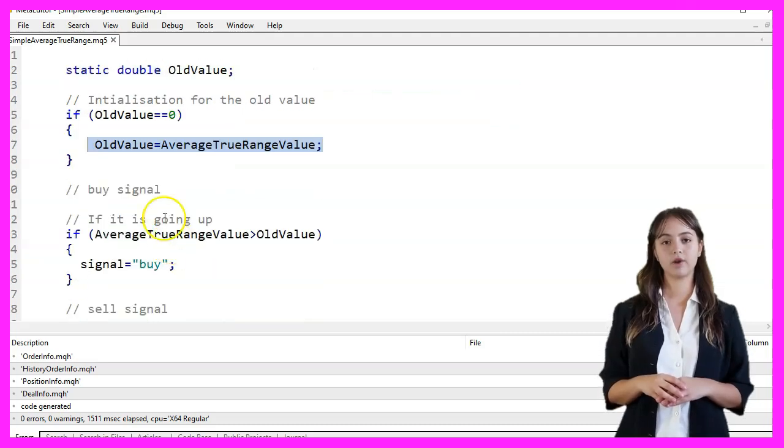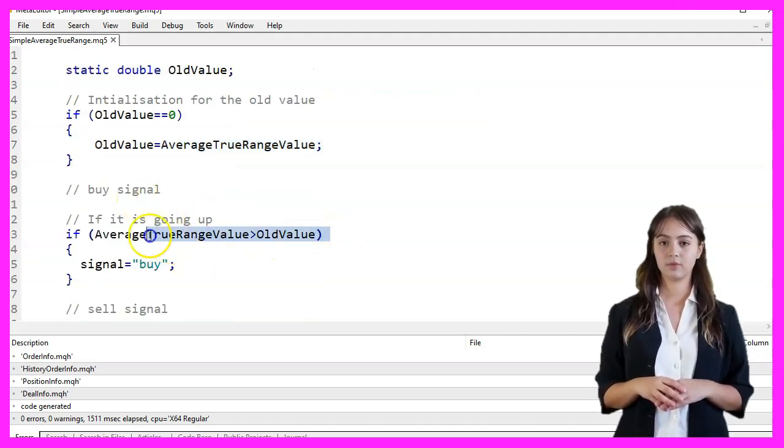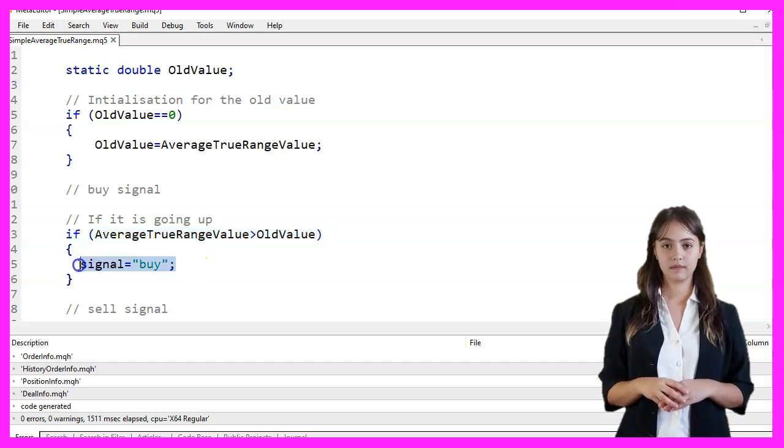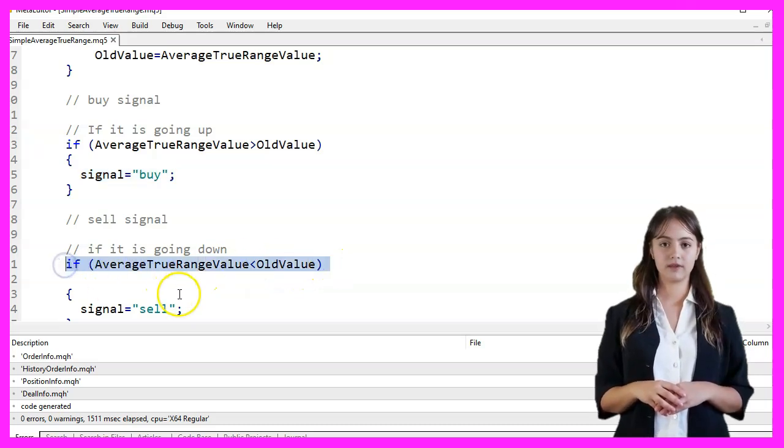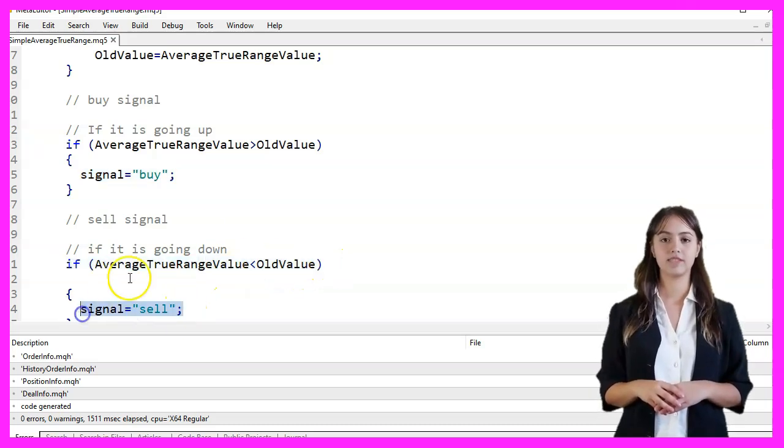For the Buy signal, if the current ATR value is greater than the previous ATR value, we set the signal to Buy. For the Sell signal, if the current ATR value is less than the previous ATR value, we set the signal to Sell.